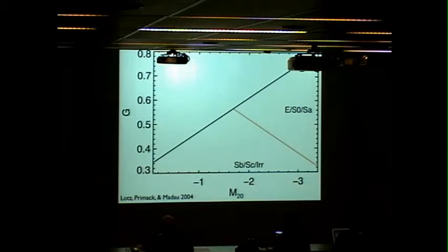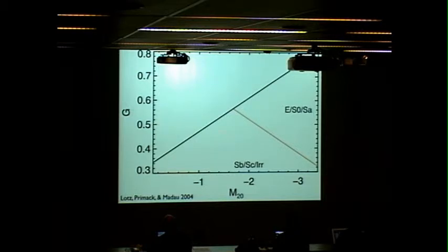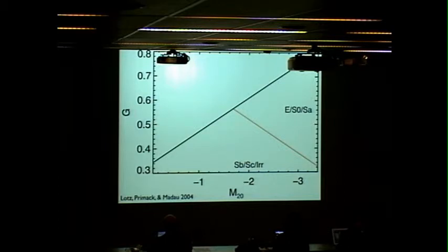On the x-axis is M20, a measure of galaxy concentration — with more concentrated galaxies on the right and less concentrated galaxies toward the bottom. It measures the spatial distribution of the brightest 20% of a galaxy's pixels. In the local universe, we can break this down into three regions: mergers or merger-like objects fall in the upper left, spiral or late-type galaxies fall in the lower region, and elliptical or early-type spirals fall in the upper right.